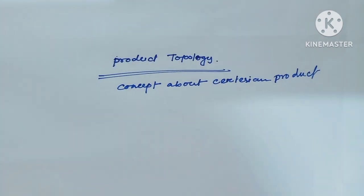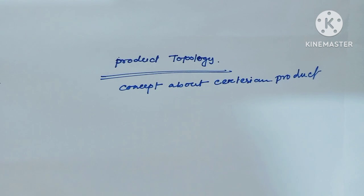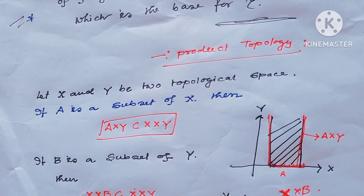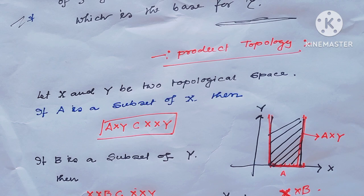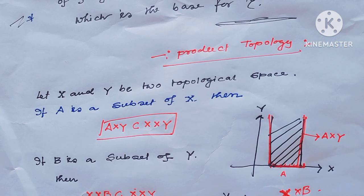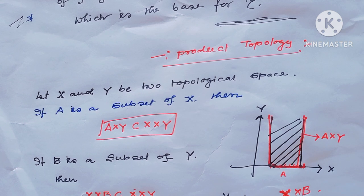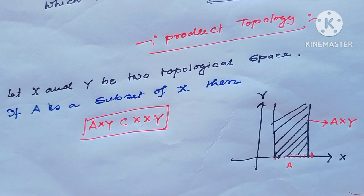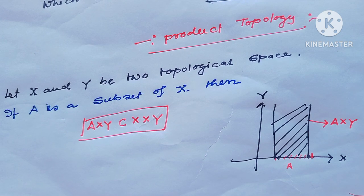Now let's see the first concept about product topology or Cartesian product. At first I will see the product of a set. Then I will see the mathematical definition of product topology. Now I will see some geometry between the product of a set. Let X and Y be topological spaces.